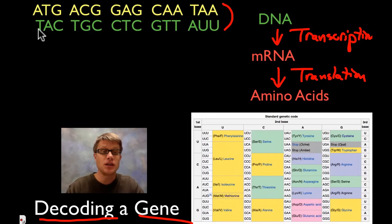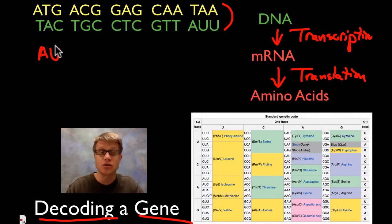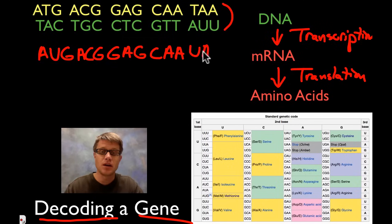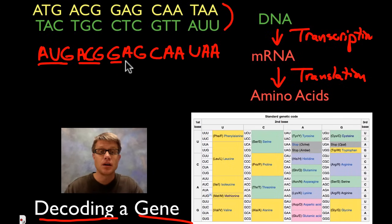So in the DNA, A goes to T. But when that unwinds, the T will actually go to A in the messenger RNA. T goes to A. A goes to U — remember we only have uracil in messenger RNA. G goes to C. C goes to G. And so if I just keep going, this right here would be A, C, G. And this is going to be G, A, G. And this is going to be C, A, A. And then this is going to be U, A, A. And so every three letters in this messenger RNA is going to be what we call a codon, because it codes for a specific amino acid.